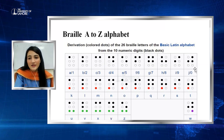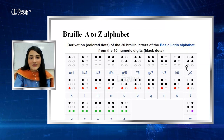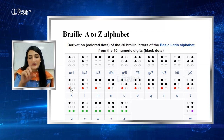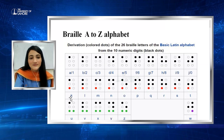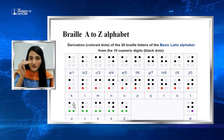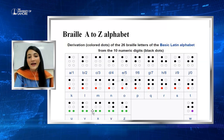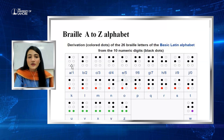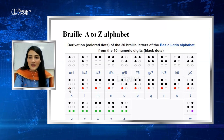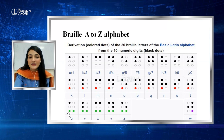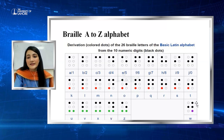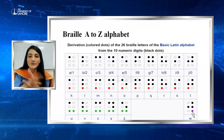So if you can remember the basic pattern from A to J, it will help you learn the rest. In pattern A to J, only the top four dots are raised. In pattern K to T, those four dots correspond with dot 3 added. In the last pattern, U to Z excluding W, dot 3 and dot 6 are added to the pattern. W is the exception and its dots are 2, 4, 5, and 6.